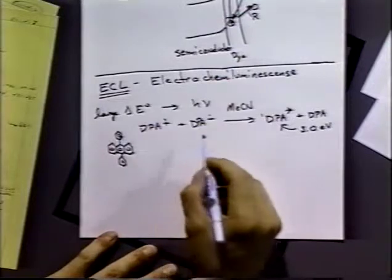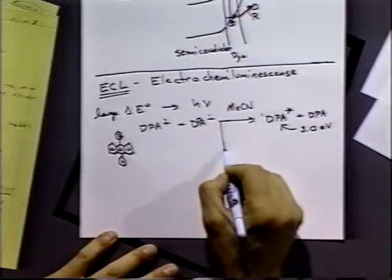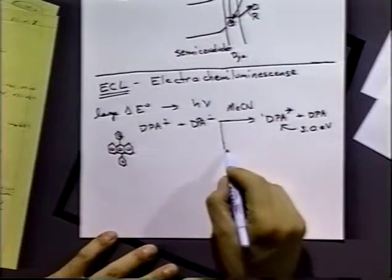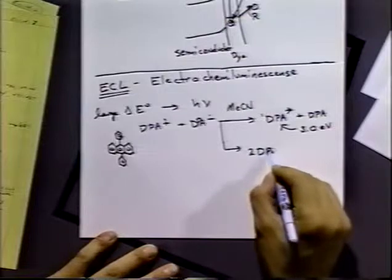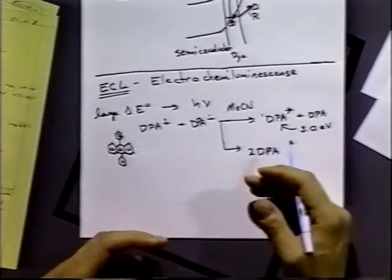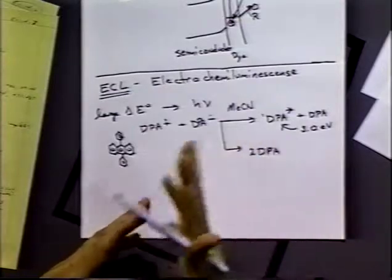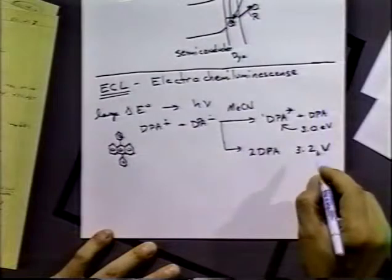That singlet excited state can decay by a number of routes, one of which is a photo-emission route to emit light at about 3 eV. That's not always the route that happens. Another possible reaction is just having two DPAs formed in the ground state, which is what normally happens in oxidation-reduction in solution — they form a lot of heat and we don't see any light. So that's about a 3.2 eV system.